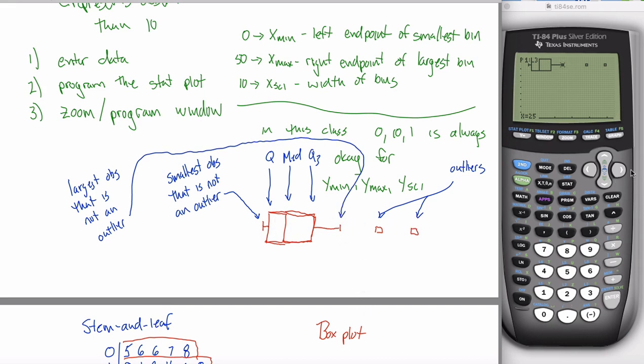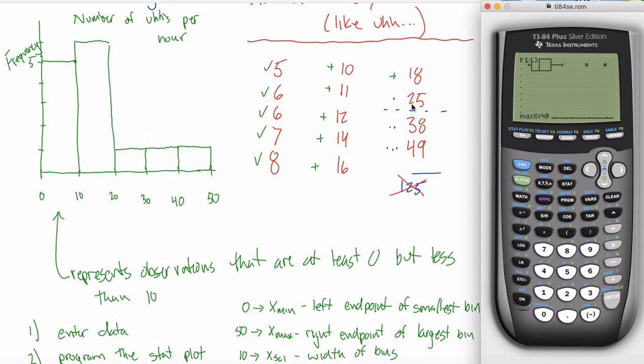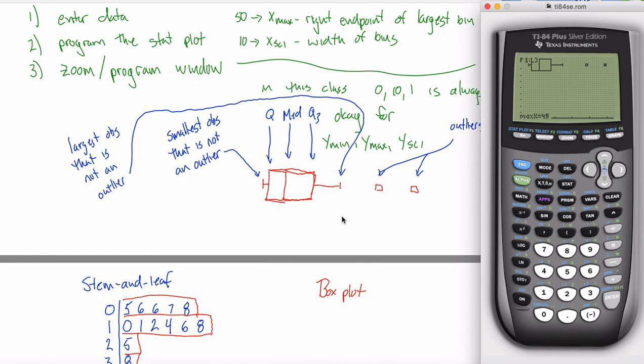So those are all things that your box plot gives you. And then these are our two outliers. We can scroll over and take a look at them. They're telling me there's an outlier at 38 and an outlier at 49. Oh yeah, that's what I kind of expected. If it told me that the 25 was the largest observation that's not an outlier, then the 38 and the 49 must be outliers. That ends up giving my picture.